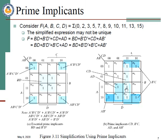These are the prime implicants — the largest groups. When you group the maximum number of ones and form a group, that is called a prime implicant. But among these, which ones are essential prime implicants? An essential prime implicant is one whose group contains a cell that is not part of any other group.